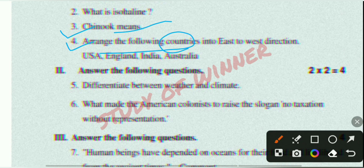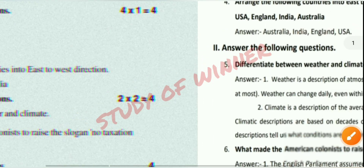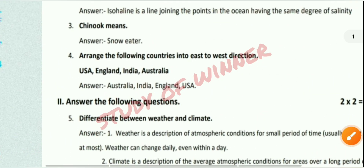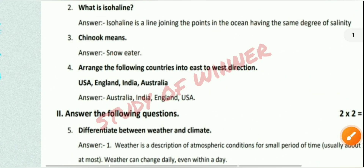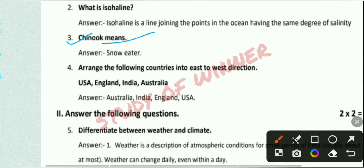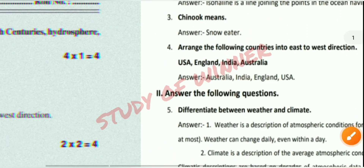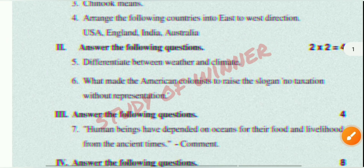Third question: What does Chinook mean? The answer is: Chinook means 'snow eater.' And for the fourth question, arranging countries from east to west, the answer is: Australia, India, England, and USA.